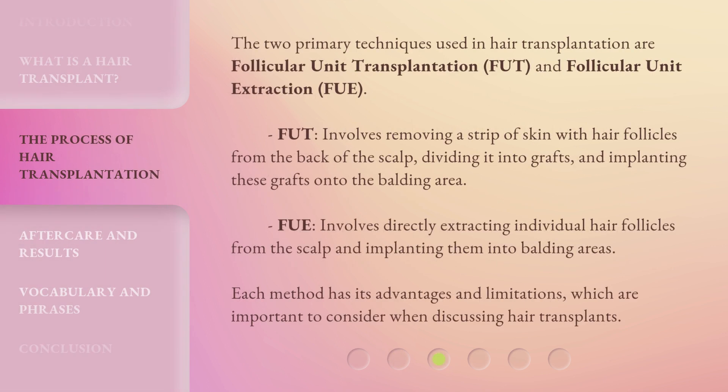The two primary techniques used in hair transplantation are Follicular Unit Transplantation, FUT, and Follicular Unit Extraction, FUE. FUT involves removing a strip of skin with hair follicles from the back of the scalp, dividing it into grafts, and implanting these grafts onto the balding area. FUE involves directly extracting individual hair follicles from the scalp and implanting them into balding areas. Each method has its advantages and limitations, which are important to consider when discussing hair transplants.